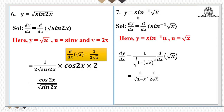Finally, y = sin⁻¹(√x). The derivative of sin⁻¹(x) is 1/√(1−x²). Here, x is replaced by √x, so the derivative of the inverse sine part is 1/√(1−(√x)²) = 1/√(1−x). We then multiply by the derivative of √x, which is 1/(2√x). So the final answer is 1/(2√x · √(1−x)).